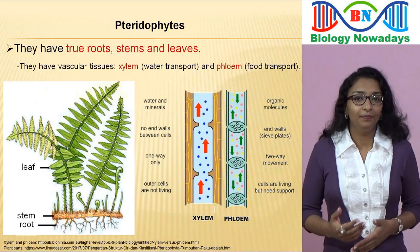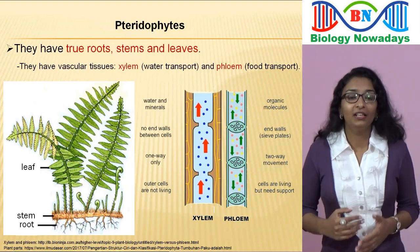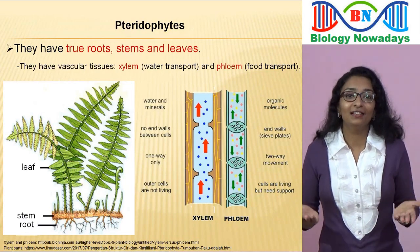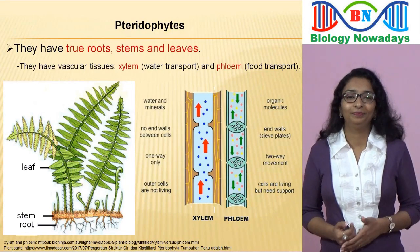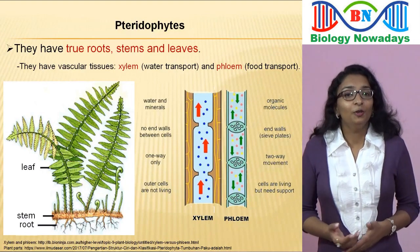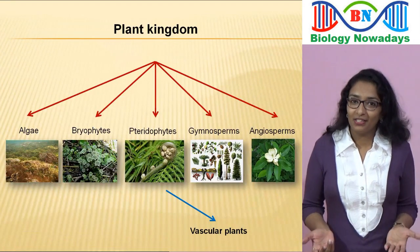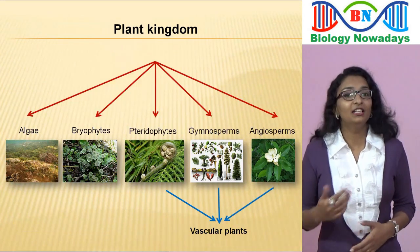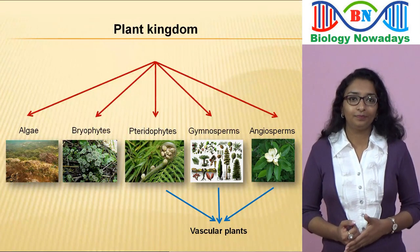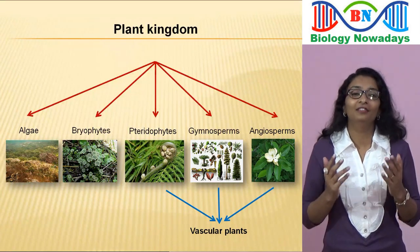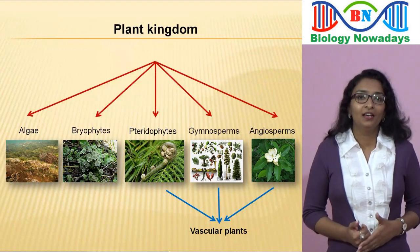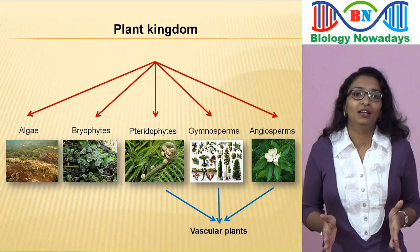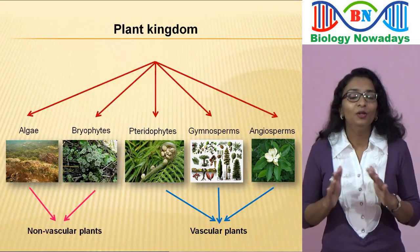The advent of the plant vascular system is one of the most important moments in the evolution of life on earth. Because of the vascular system, water and food can be transported over greater distances in the plant body, allowing plants to increase in size and more successfully invade land. Pteridophytes are called vascular plants, and they are the first vascular plants. The groups algae and bryophytes don't have vascular tissues and so they are called non-vascular plants.